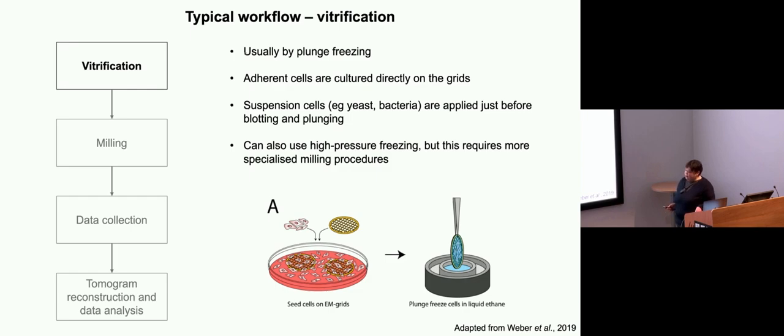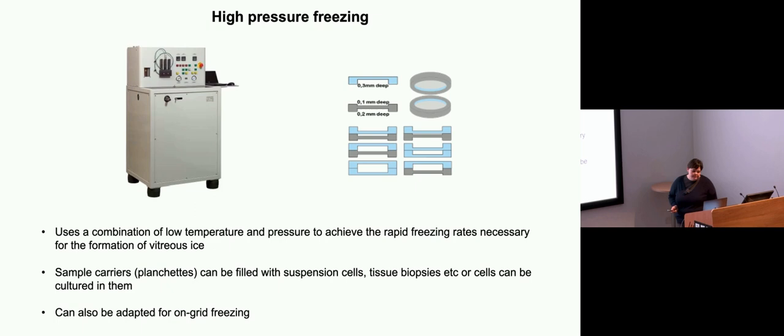You can also use high-pressure freezing for this. This is what one of these instruments looks like. They're quite big and make a lot of noise. I'm not going to go into too much detail, but basically it uses a combination of pressure and temperatures to achieve the rapid freezing rates. Instead of grids, you have these sample carriers known as planchettes. They come in a couple of different formations of well depth that are then sandwiched together and frozen.